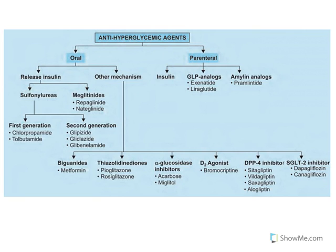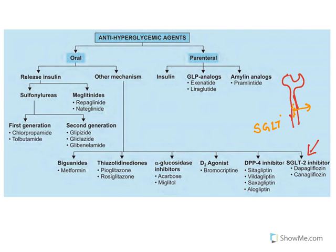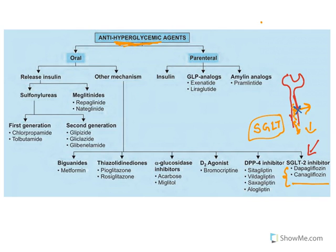One more class is sodium glucose transporter inhibitors. In the nephron, glucose from the tubule is reabsorbed with the help of a transporter known as the sodium glucose transporter. If this transporter is inhibited, glucose goes out of the body, effectively reducing blood glucose levels and treating hyperglycemia. The excess glucose leaves the blood — this is how these drugs act. Examples include dapagliflozin and canagliflozin.